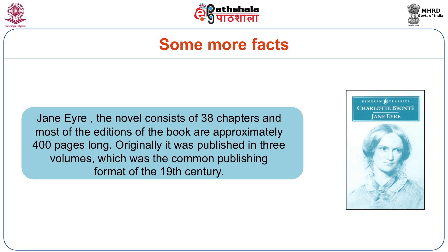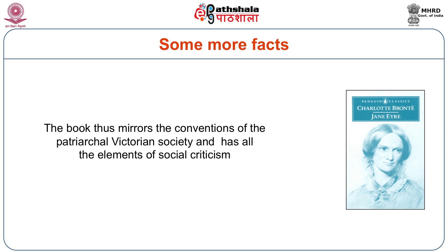This novel consists of 38 chapters and most editions of the book are approximately 400 pages long. Originally, it was published in three volumes, which was the common publishing format of the 19th century — as with Charles Dickens, Thomas Hardy, and others. The book mirrors the conventions of the patriarchal Victorian society and has all the elements of social criticism. The ills of society are very well criticized by the novelist.